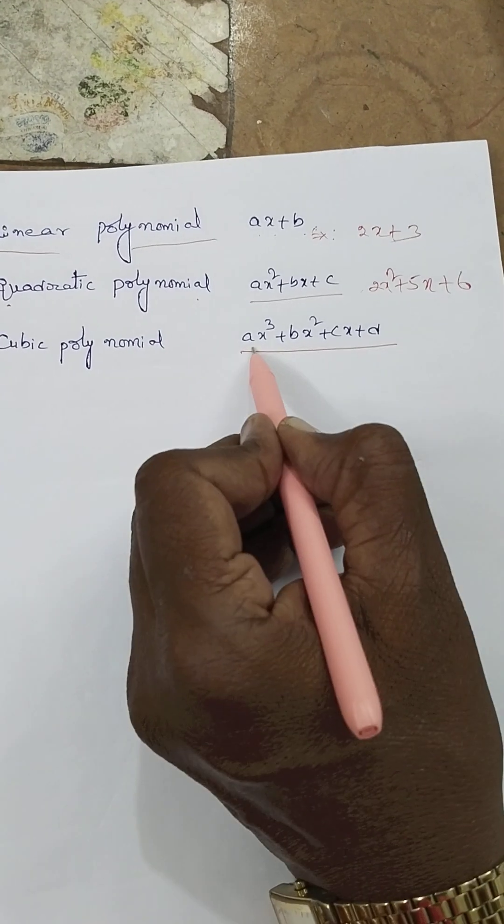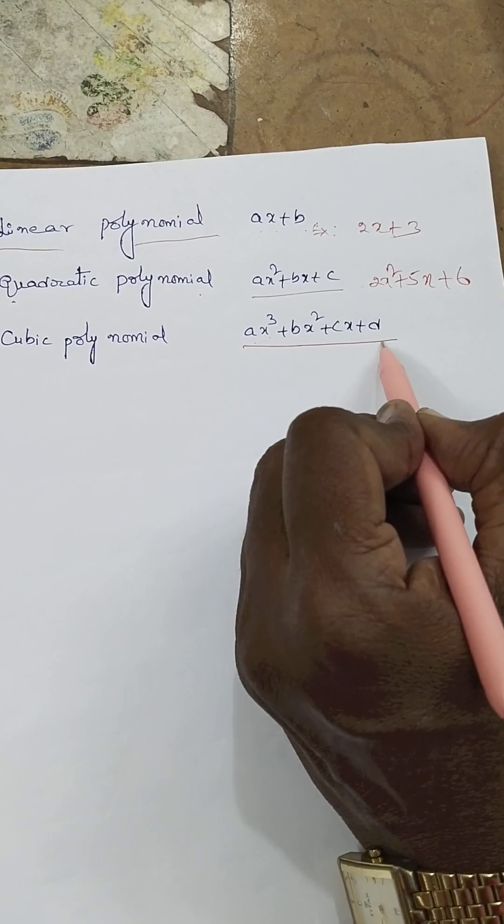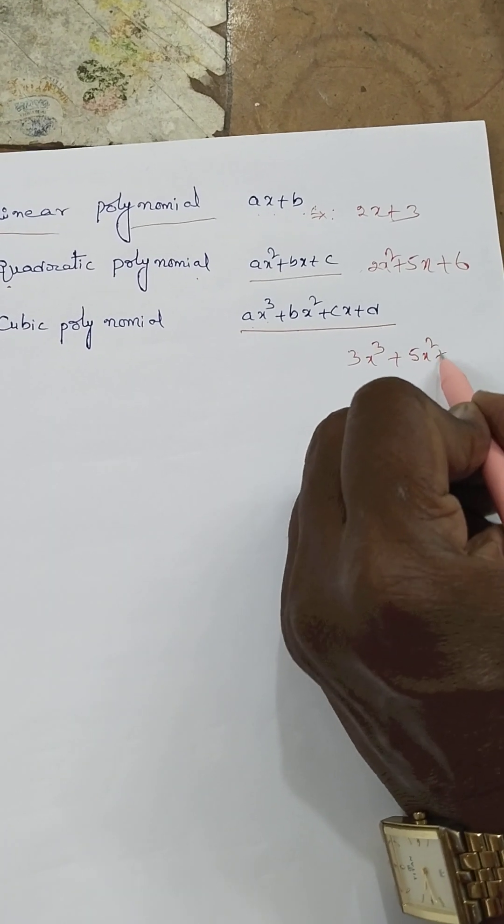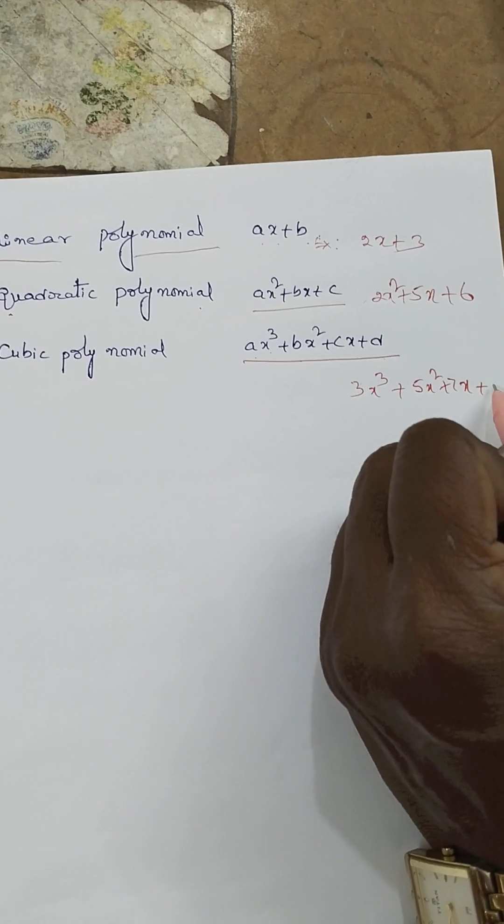A cubic polynomial, ax cube plus bx square plus cx plus d. 3x cube plus 5x square plus 7x plus 8.